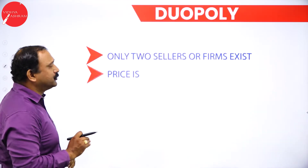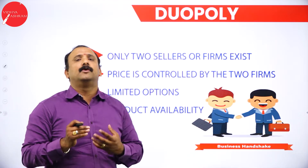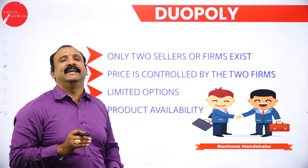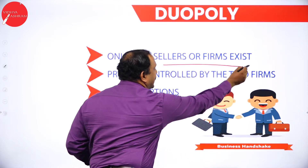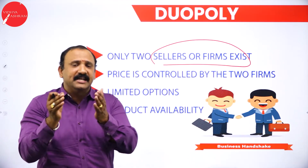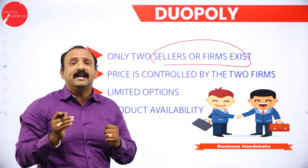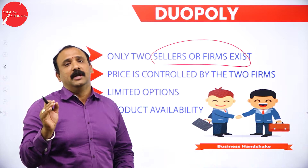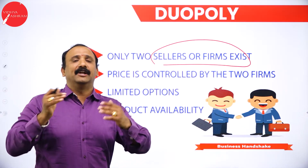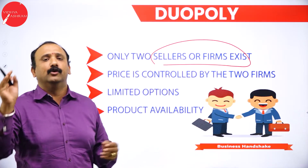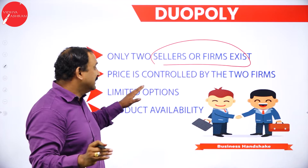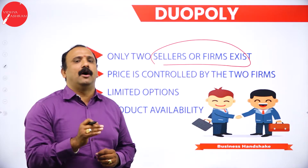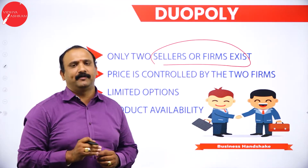Moving forward to duopoly. When you look at the picture, there are two firms in existence. The price is controlled by these two firms — they are not going to give any option to bargain or discuss the price. It is purely controlled by these two people.